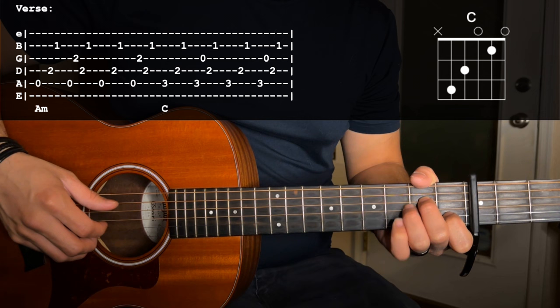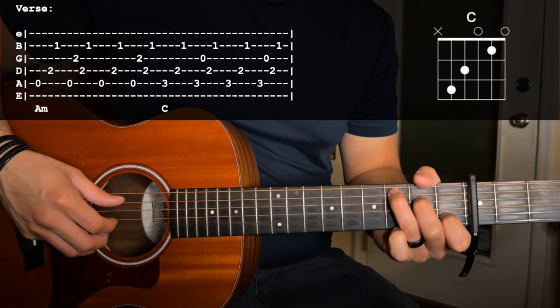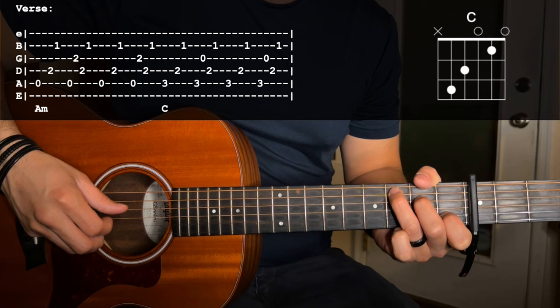Next chord we're going to use is a C, so now our root note becomes the third fret of the A string, and we're going to do the same picking pattern. Root, D, B, root, G, D, B.